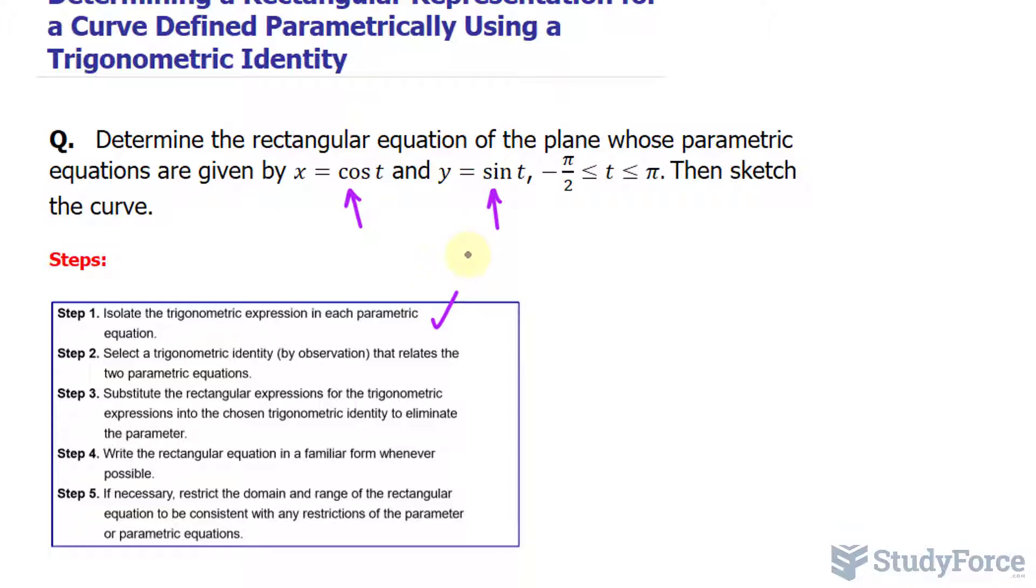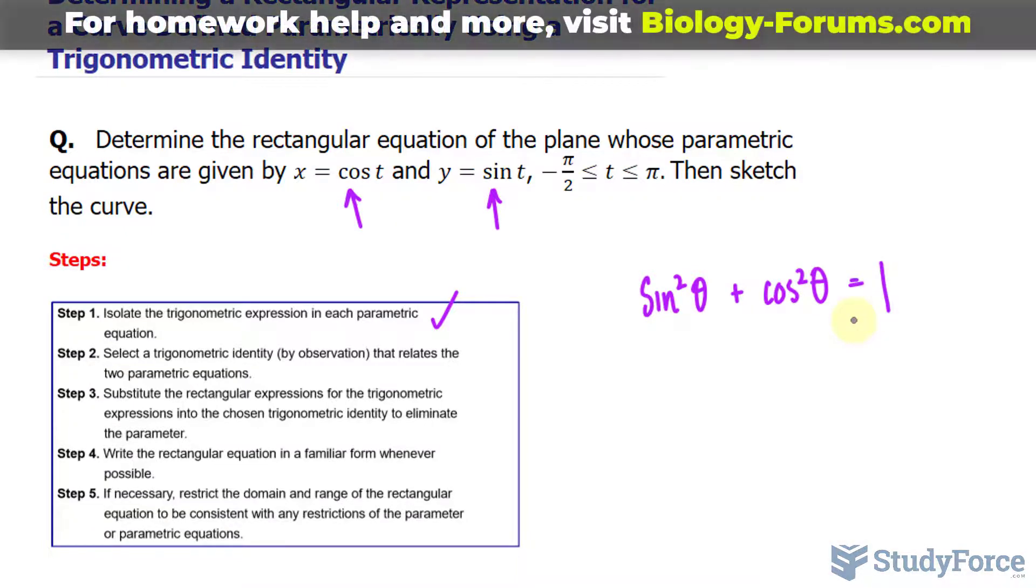Select the trigonometric identity by observation that relates the two parametric equations. Now what relates cosine and sine, there are many trigonometric identities but the one that comes to mind is sin²θ + cos²θ = 1 and this is called the Pythagorean identity.